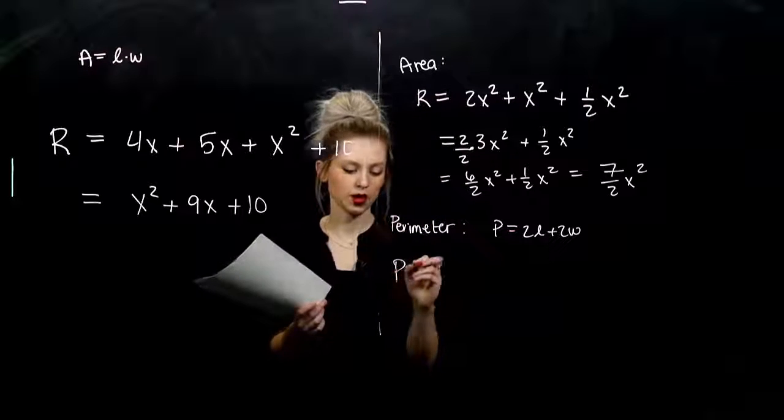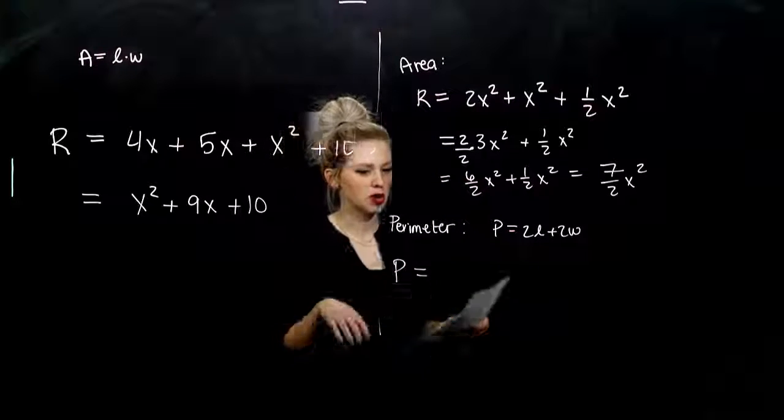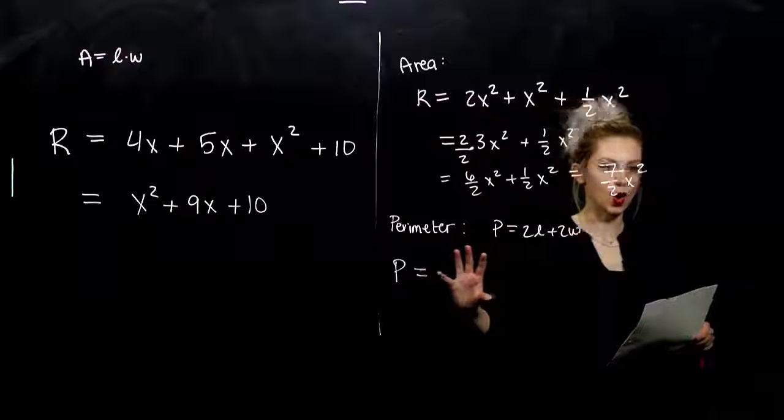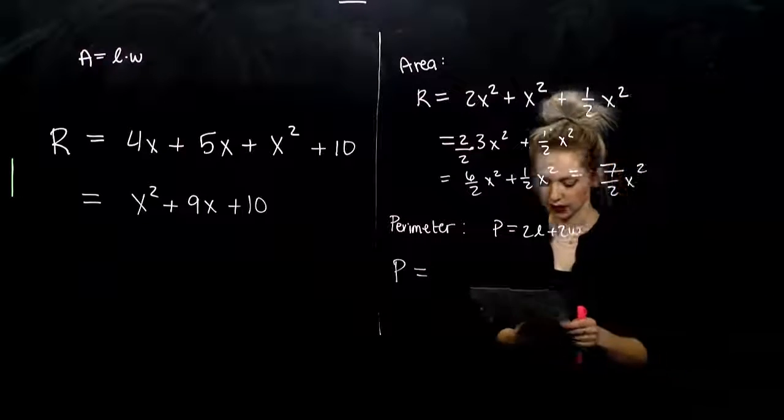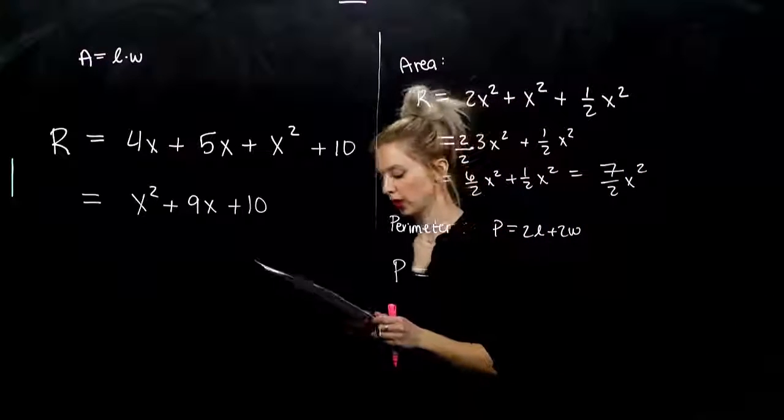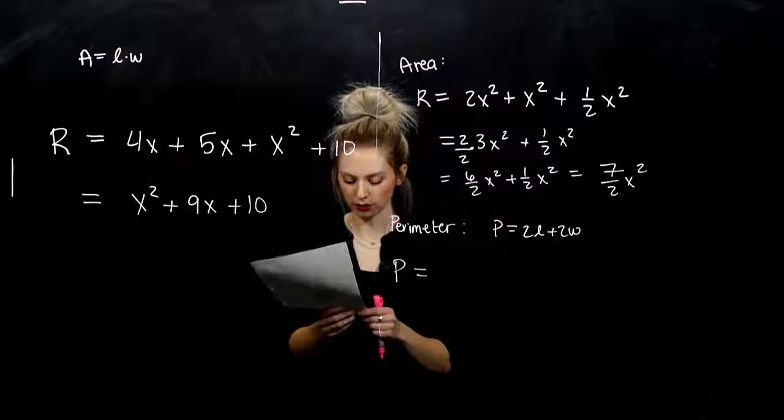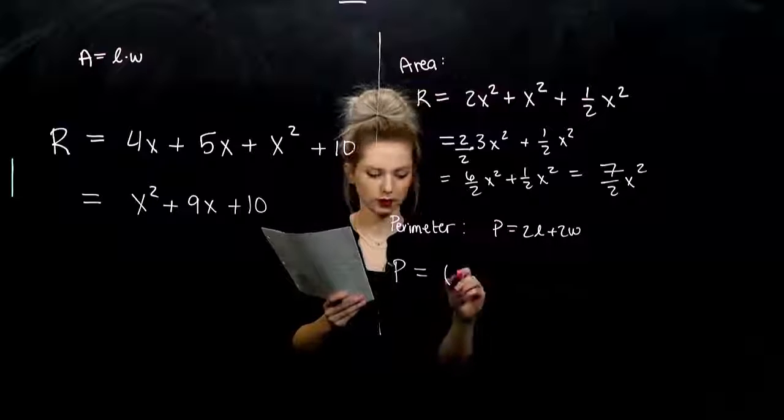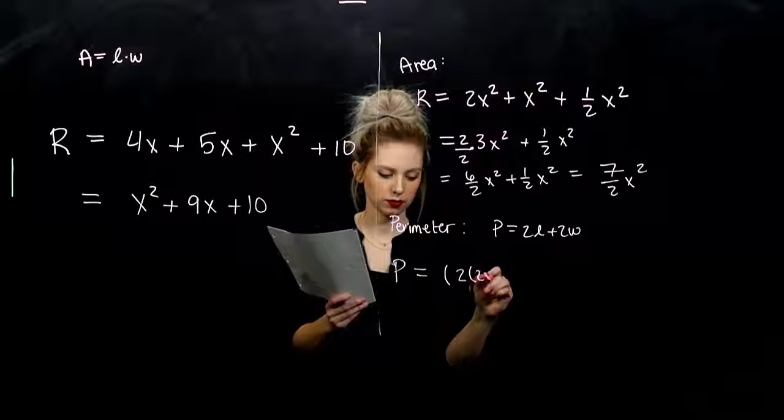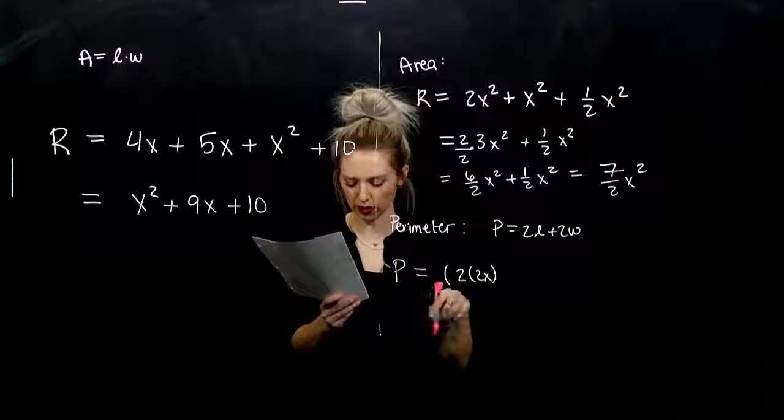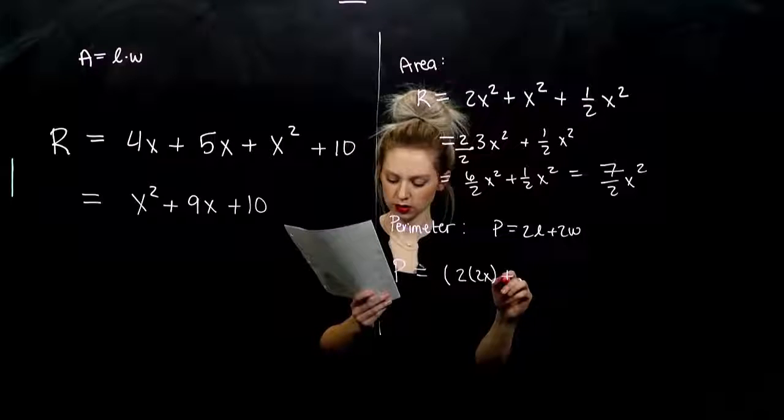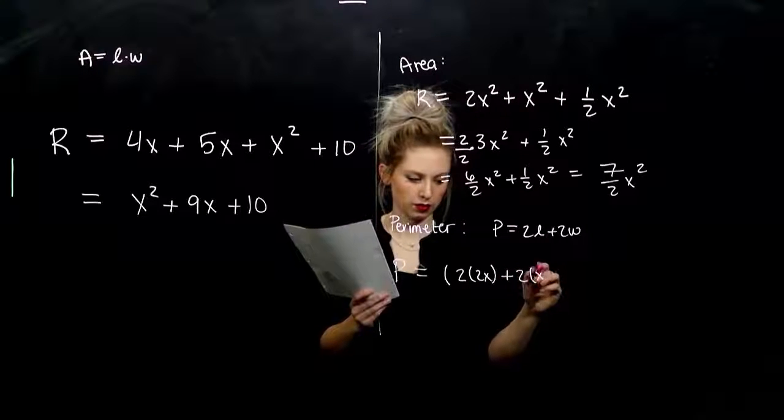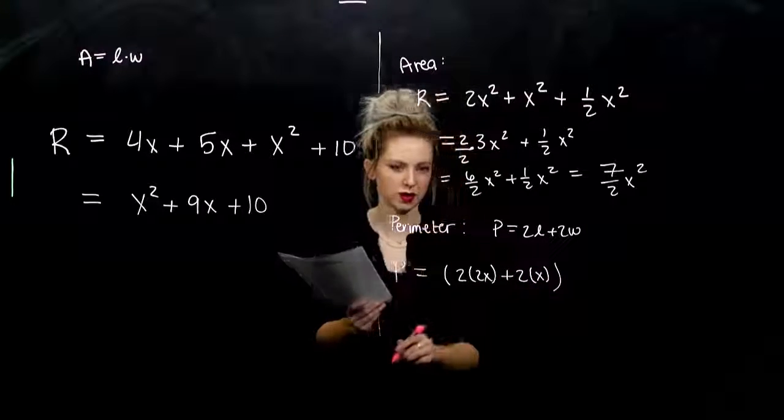So the perimeter is 2 times the length plus 2 times the width. So a polynomial that represents the perimeter of all of them. So we need the perimeter of the first, perimeter of the second, perimeter of the third, adding all of those together. So from the first rectangle, 2 times the length will give me 4X if you want to write it out like that. Plus 2 times the width.